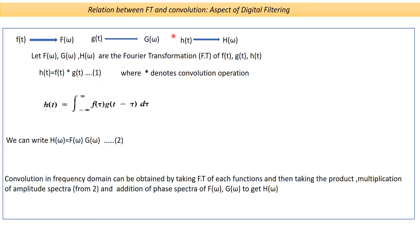This is a very important relation between the Fourier transformation and convolution — it is part of digital filtering. If you have two functions f(t) and g(t), their corresponding Fourier transforms are F(ω) and G(ω). Convolution in time corresponds to multiplication of amplitude spectra and addition of phase spectra in the frequency domain. The importance is that working in frequency space is computationally less expensive and more efficient, so we generally do all processes in the frequency domain rather than in the time domain.